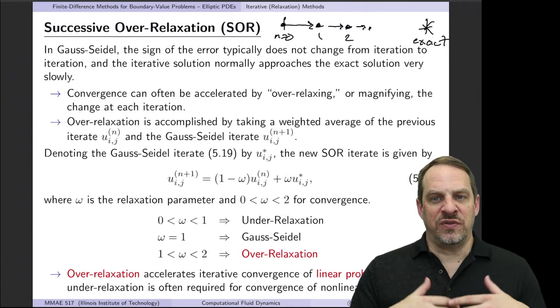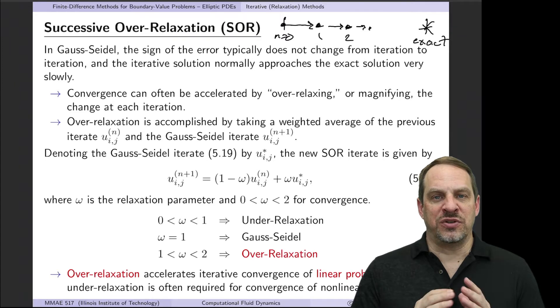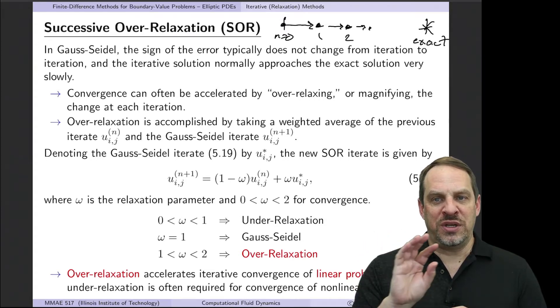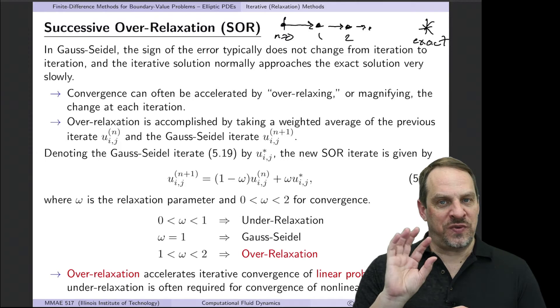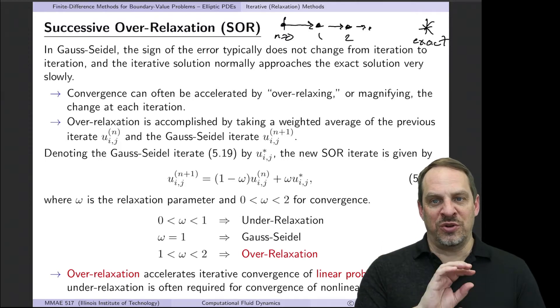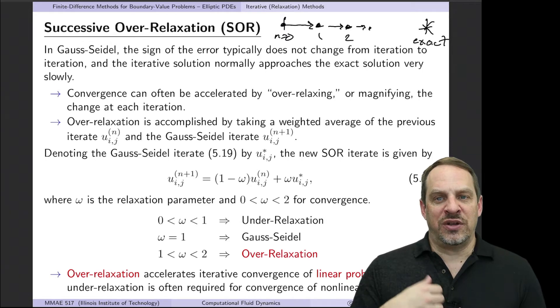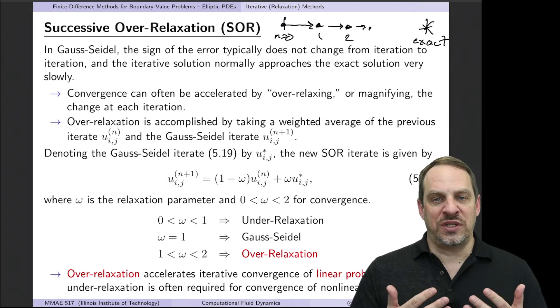In the previous video, we introduced the idea of using iterative techniques for solving linear systems of algebraic equations. In particular, we're looking at the Poisson equation using finite difference approximations. We looked at Jacobi and Gauss-Seidel. Jacobi is fine for baseline comparison with other methods, but it's too slow and requires too much storage. Gauss-Seidel fixes that by making one small change, and that is to use the most recently updated information as it becomes available.